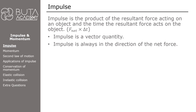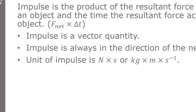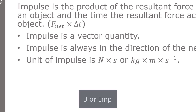Impulse is equal to the product of the net force and time. The unit of force is Newton and the unit of time is second. Therefore, the unit of impulse is Newton times second, which can also be written as kilograms meters per second. We represent force by symbol F and time by symbol T. In classical mechanics, impulse is symbolized by J or IMP.